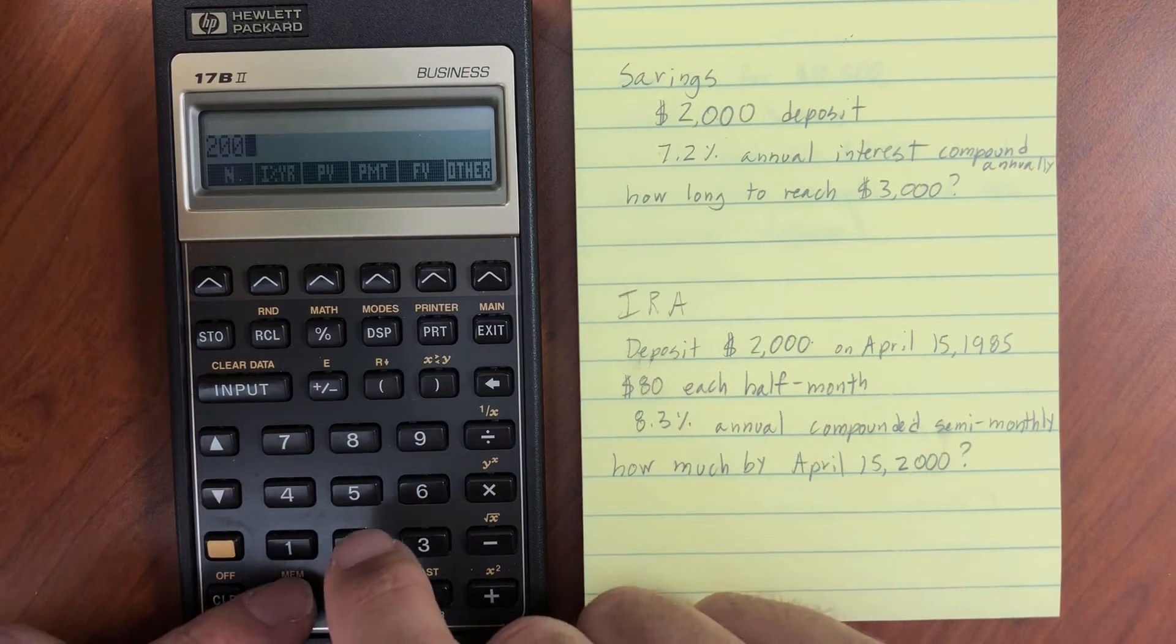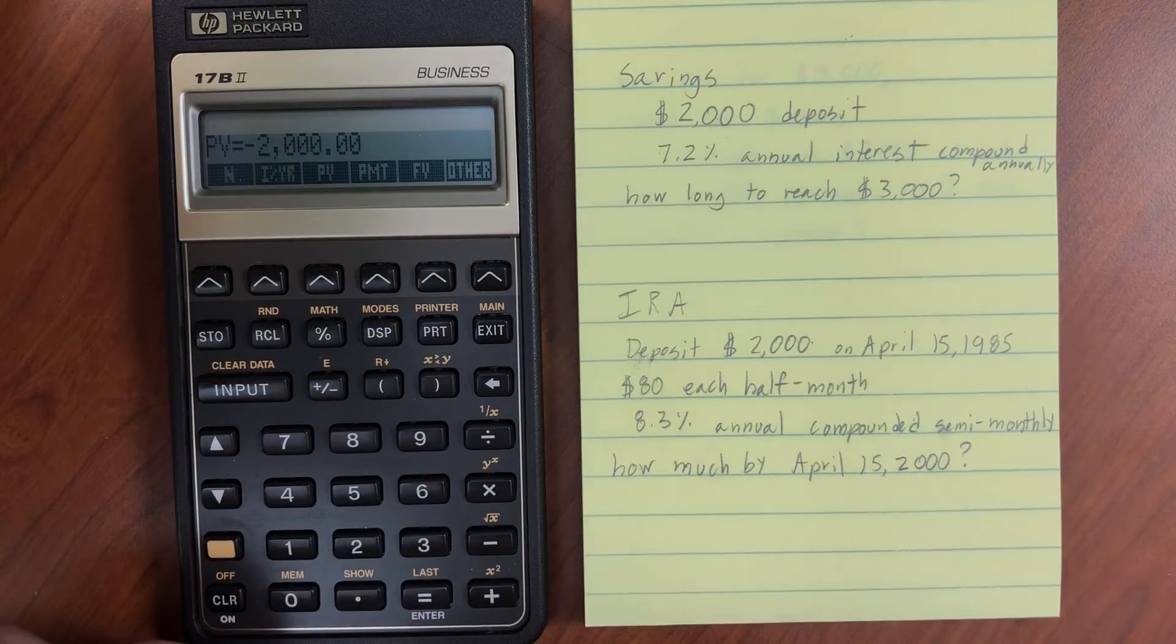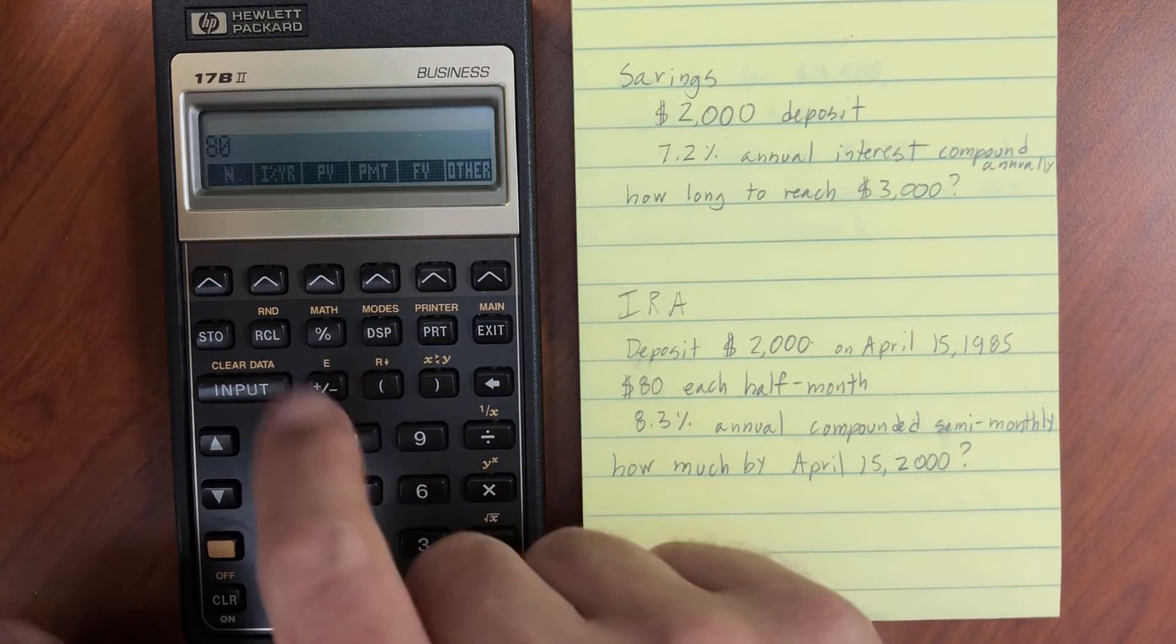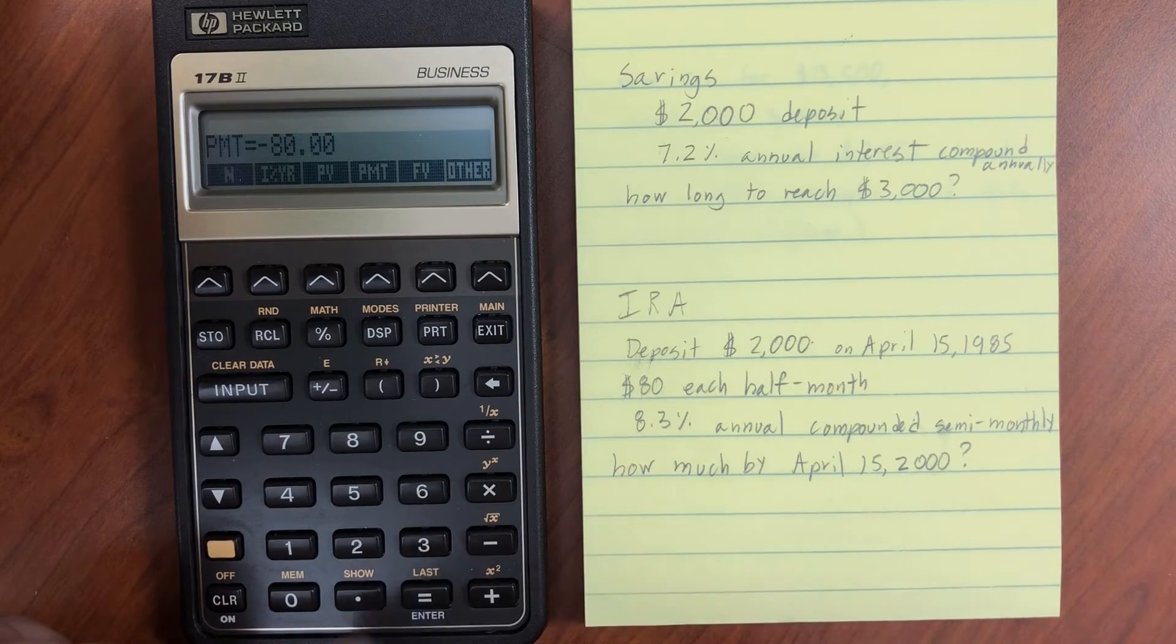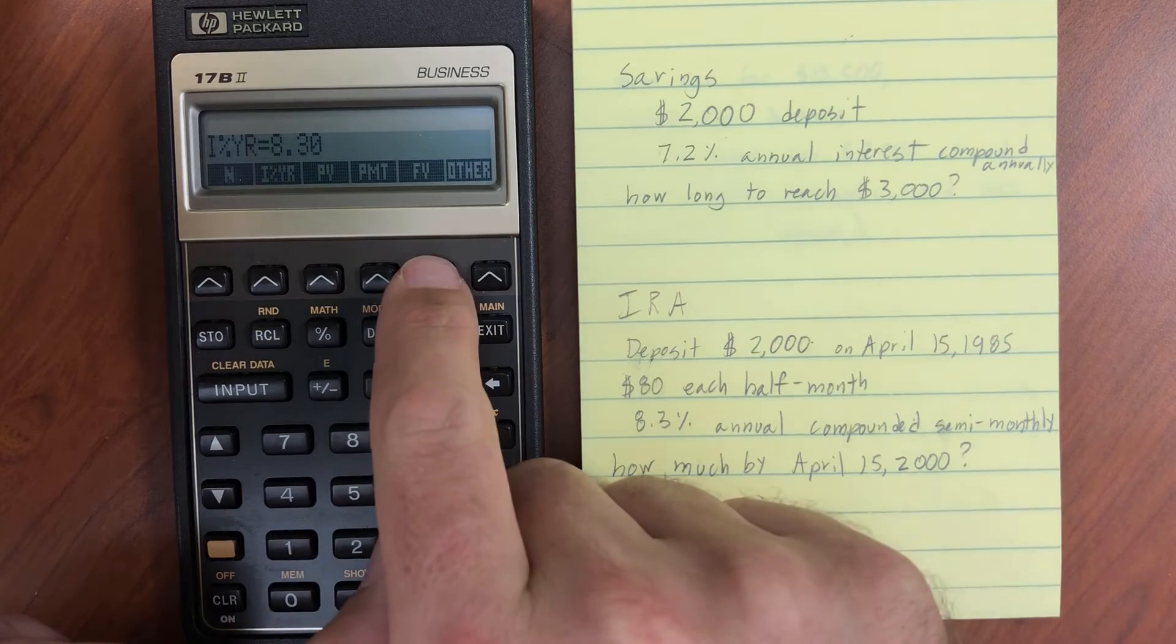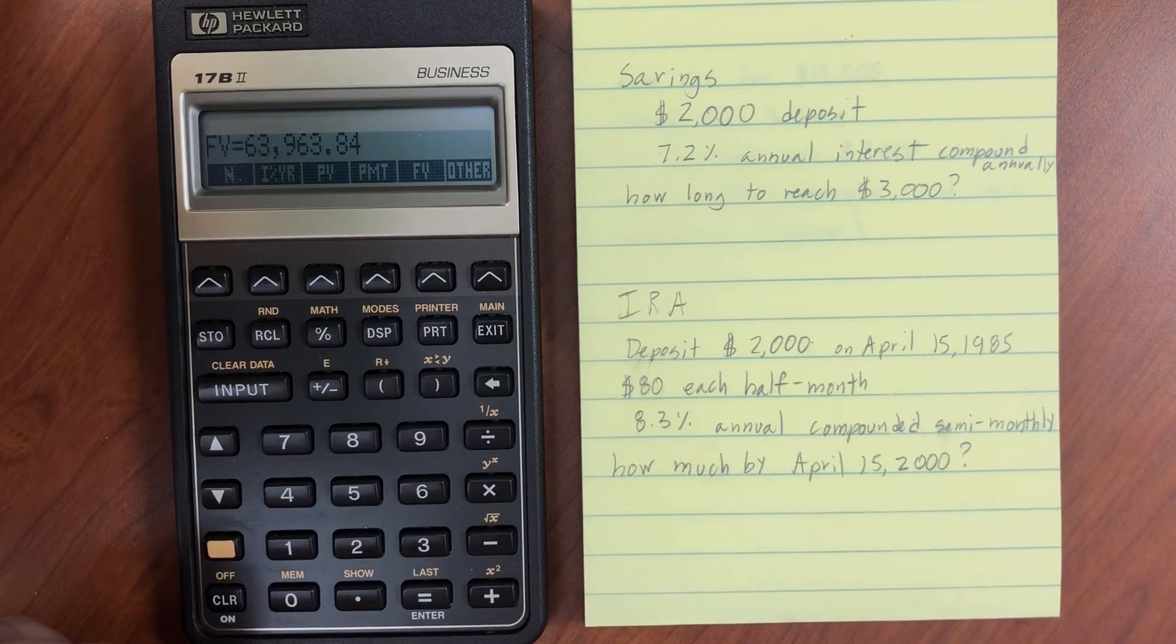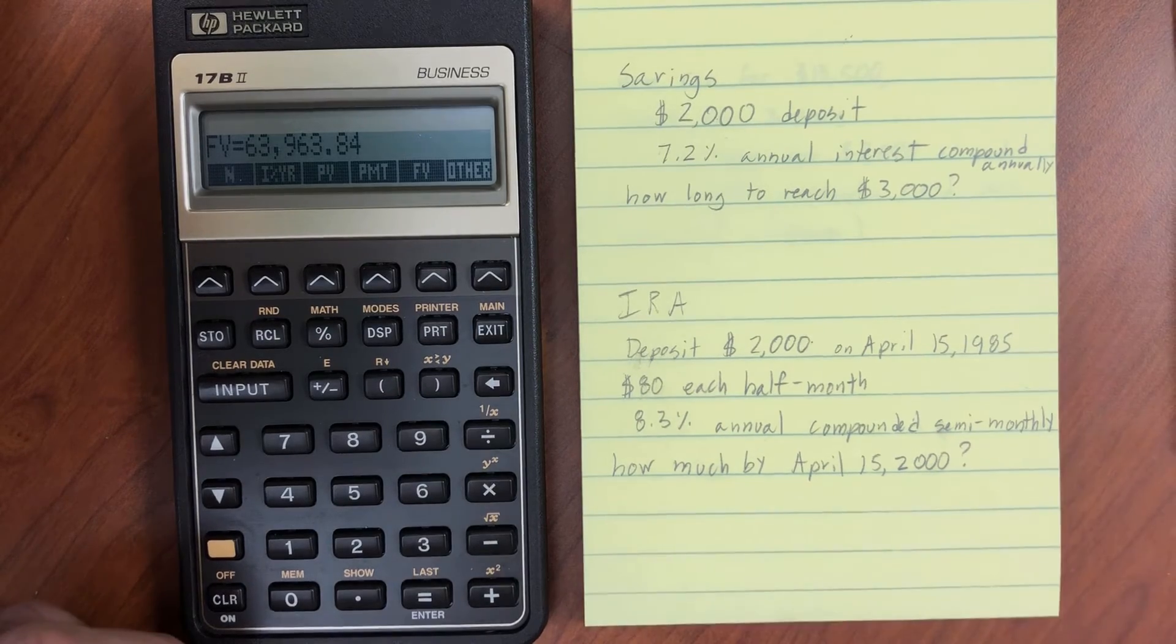We have $2,000, which we're going to deposit now. I'll change the sign and put that as our present value. $80 is going to be our payment each period. And 8.3% is going to be the interest rate. So what will be our future value? So we'll have $63,963.84 on April 15, 2000 or so. So better get to saving.